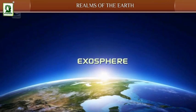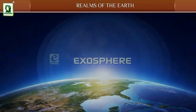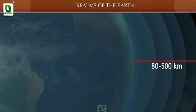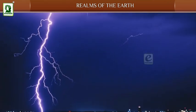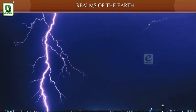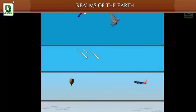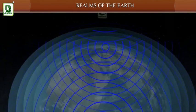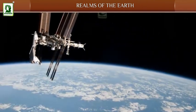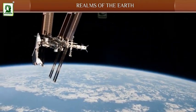Exosphere: It is the outermost layer of the atmosphere. It contains electrically charged particles, and this region known as the ionosphere transmits radio waves back to the earth. It is the layer where space shuttles orbit.